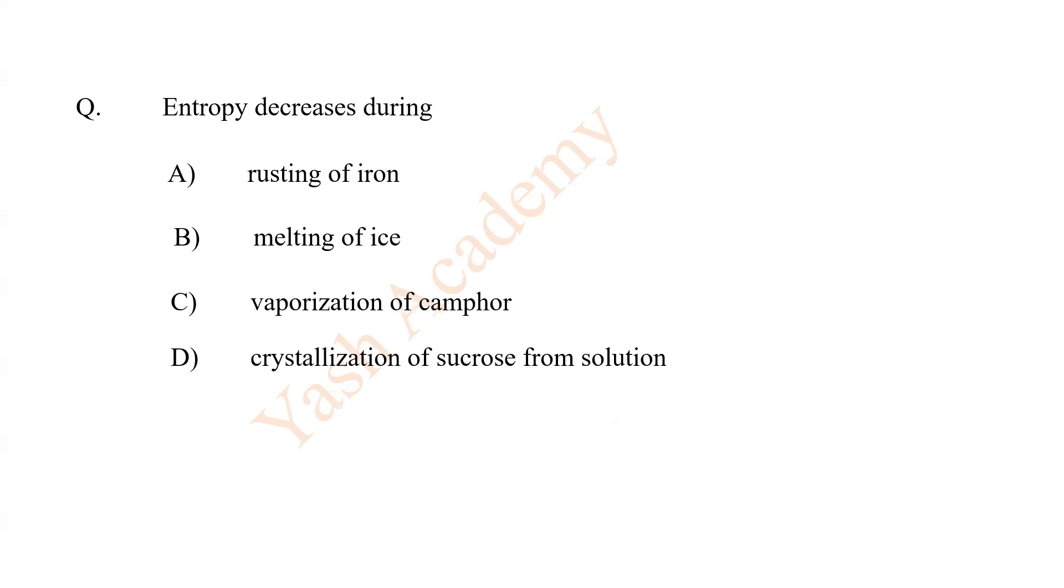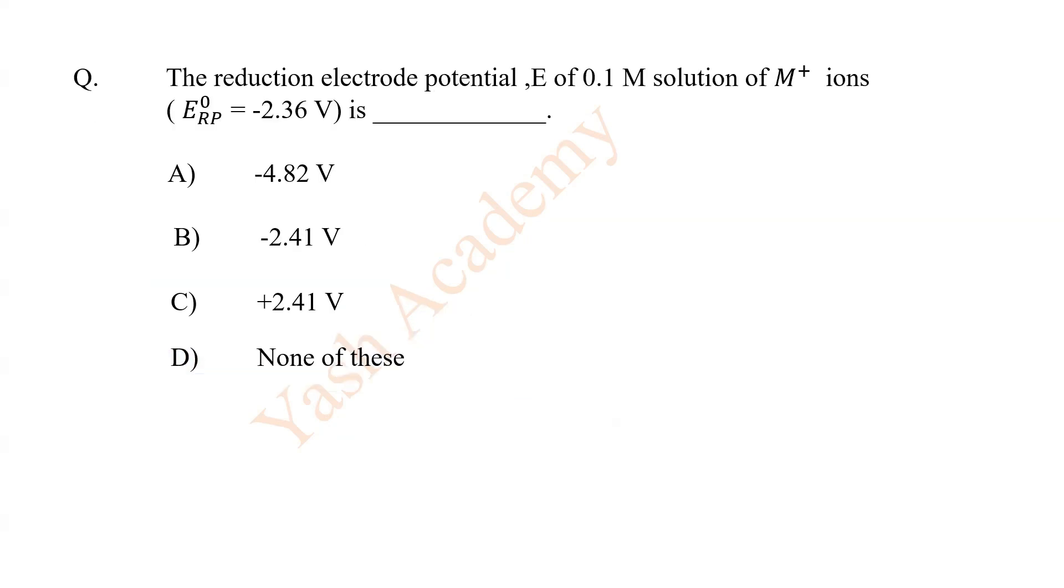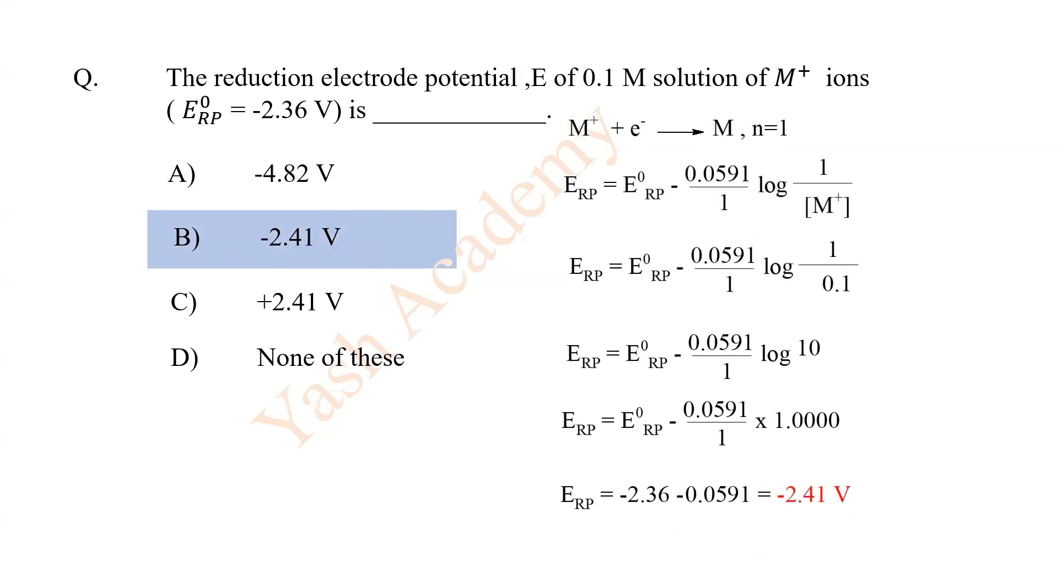Entropy decreases during D, crystallization of sucrose from solution. The reduction electrode potential E of 0.1 molar solution of M plus ions, E0 RP is equal to minus 2.36 volt, is B, minus 2.41 volt.